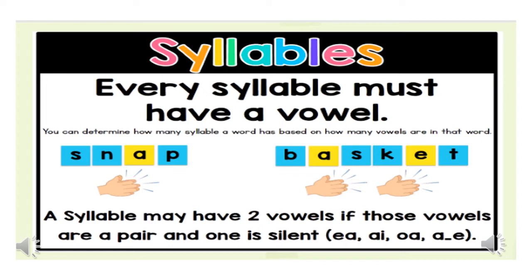The word is snap. The easy way is you need to clap and see how many syllables are there in a word. Snap, it's one. Basket, two.